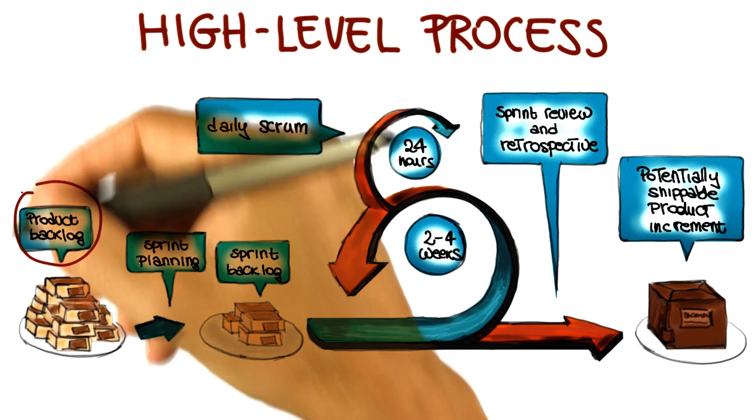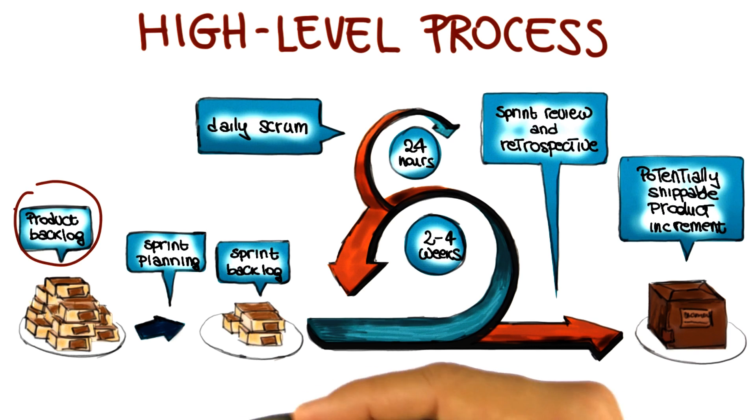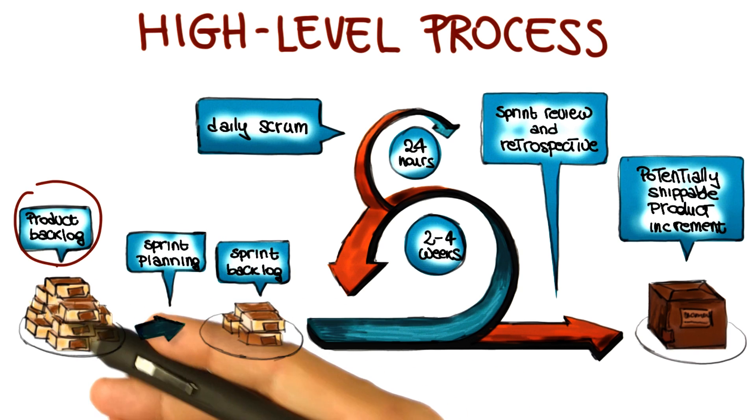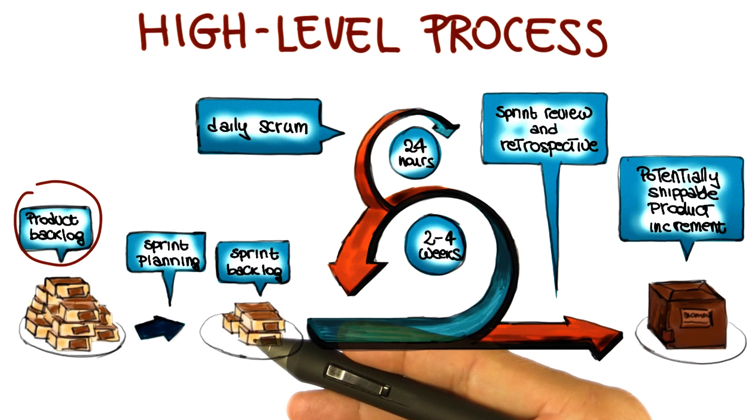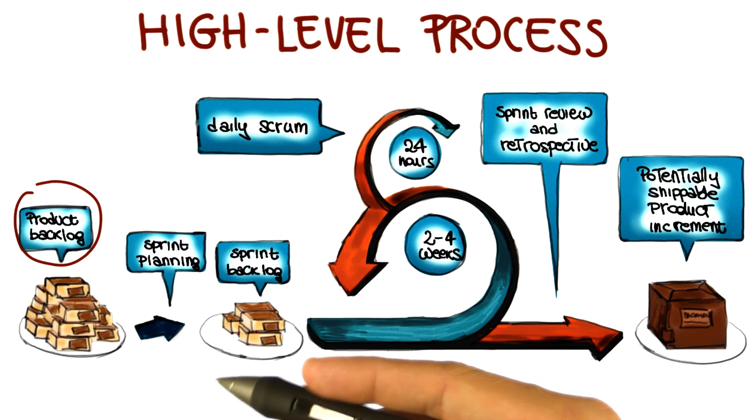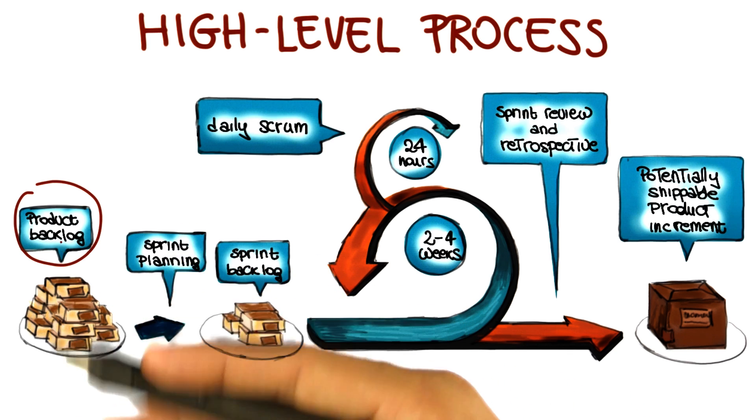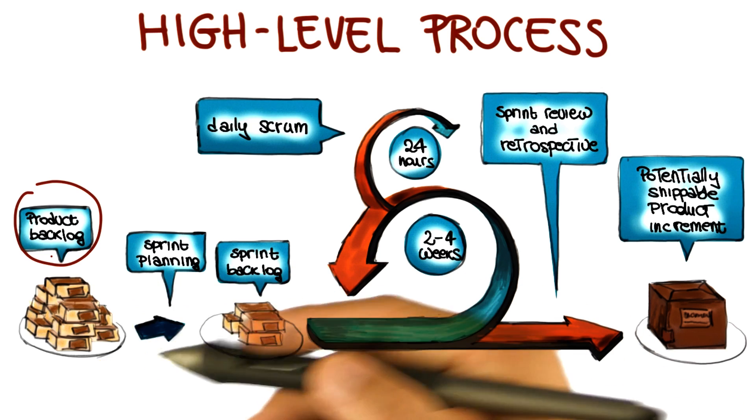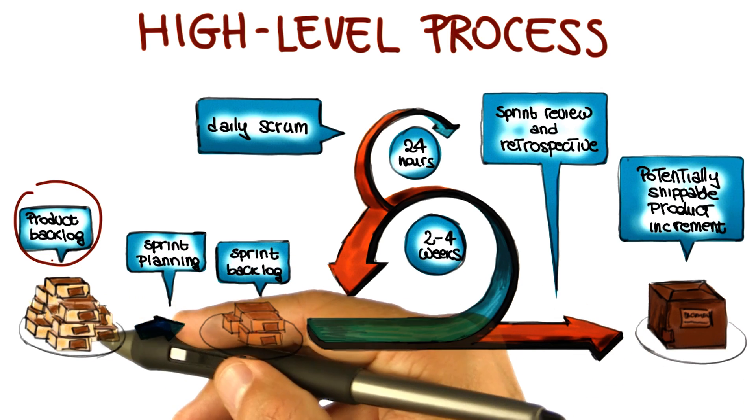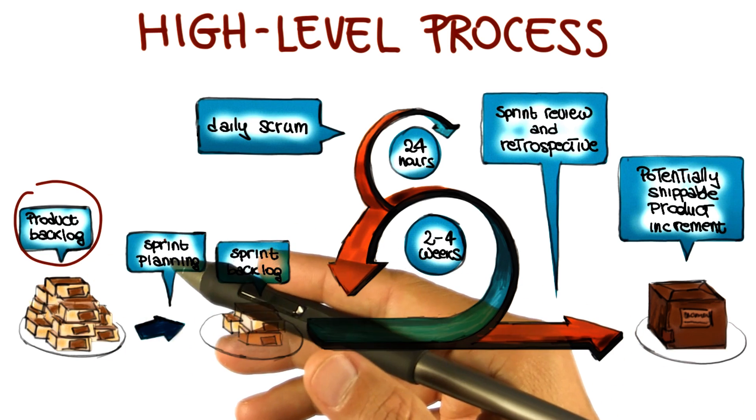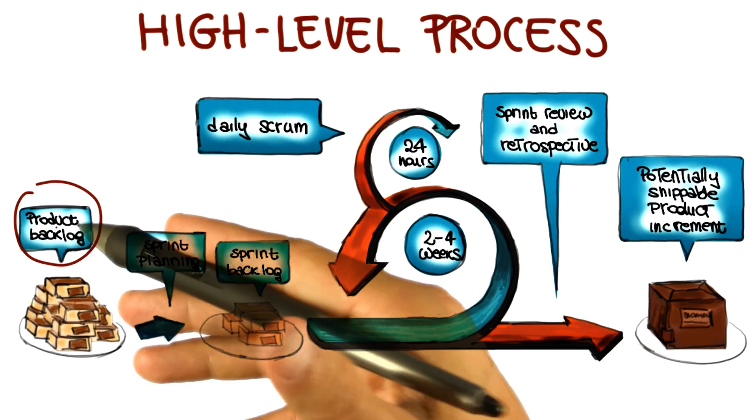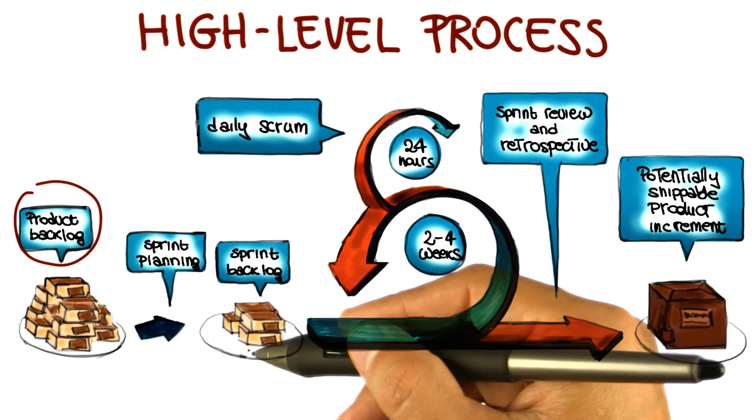We're going to start with the product backlog. Product backlog is the single source of requirements for the process. They're ordered by value, risk, priority, and necessity, so that all of these characteristics can be taken into account when selecting which backlog items to consider for the next iteration. It's a living list, in the sense that backlog items can be added or removed, and it's normally defined by the product owner.